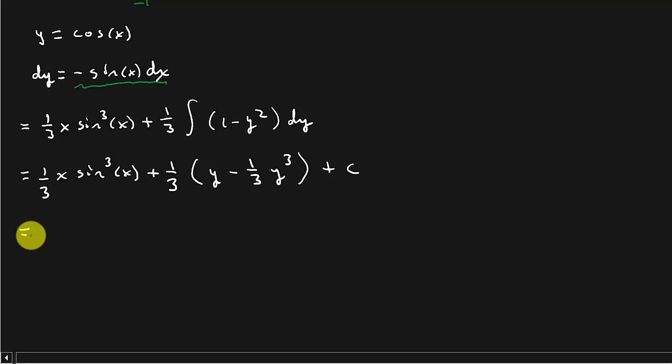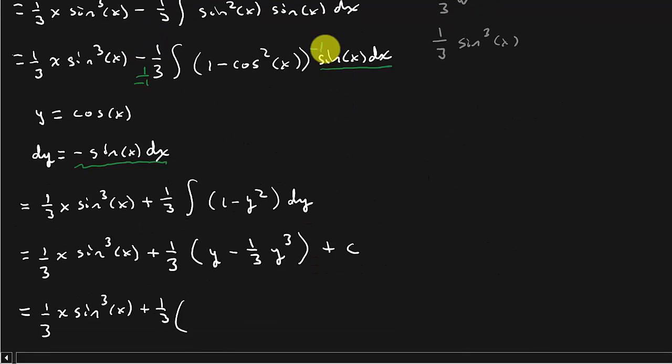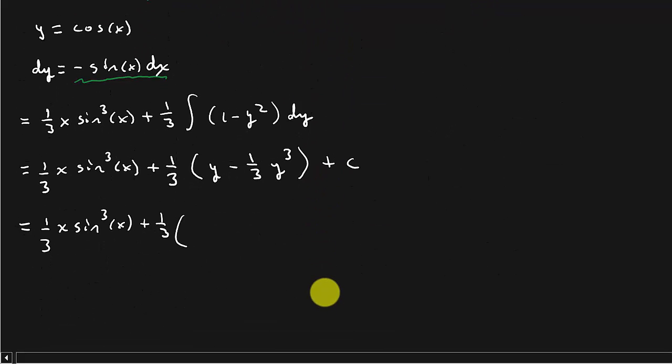And then that's going to give me 1 third. Having a little trouble making my 3's today. x sine cubed x plus 1 third. Now we've got to substitute back in because our problem is in terms of x. And so here I have y is cosine x. So in the place of y, I've got cosine x minus 1 third. And in the place of y, I'm going to put cosine. So that's cosine cubed x plus c.